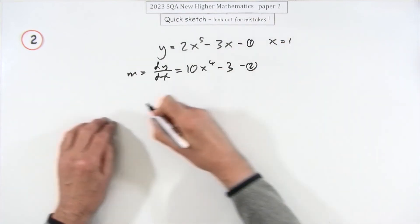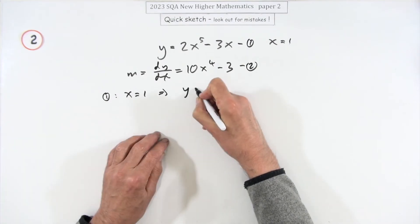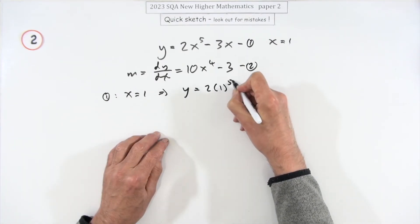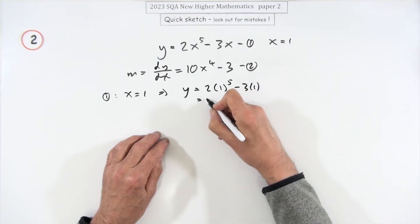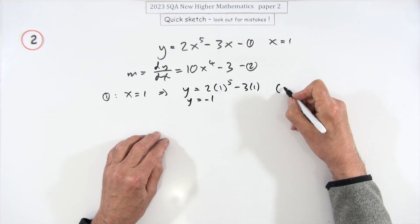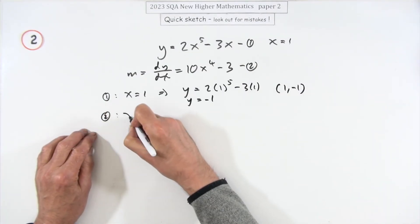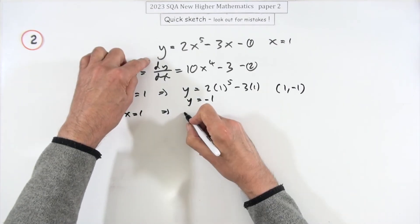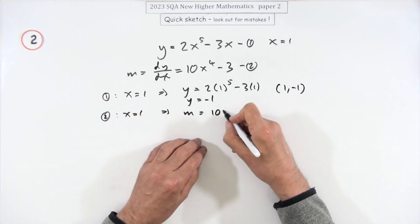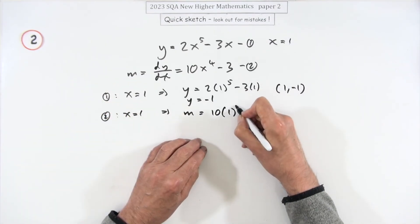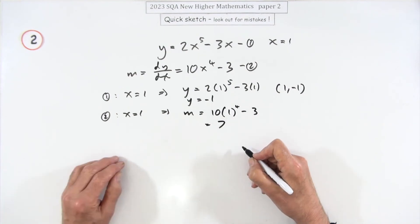So now I've got these two equations. I'll put x as 1 into this one. So using number one, x equals 1 means that y is going to be 2 times 1 to the power 5. You can see the answer because it's only ones, isn't it? 2 minus 3, so it's minus 1. So the point is 1, negative 1. Using equation two, if you put 1 into the second equation, you'll get the gradient. You'll see it before you write it down again because it's just 1 to the power 4 minus 3. So 10 take away 3, so that's 7.